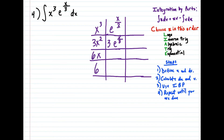On the side, if you want to do a little u-sub here, you'll see that 3e^(x/3) is in fact the antiderivative of e^(x/3). But the pattern is that each new antiderivative just gets multiplied by 3. So the next one is going to be 9e^(x/3), and then the last one here is going to be 27e^(x/3).